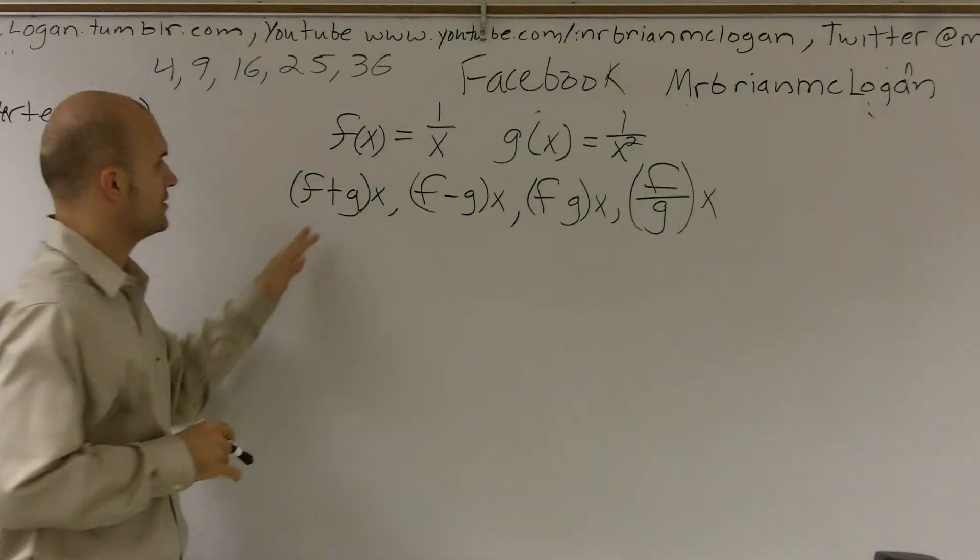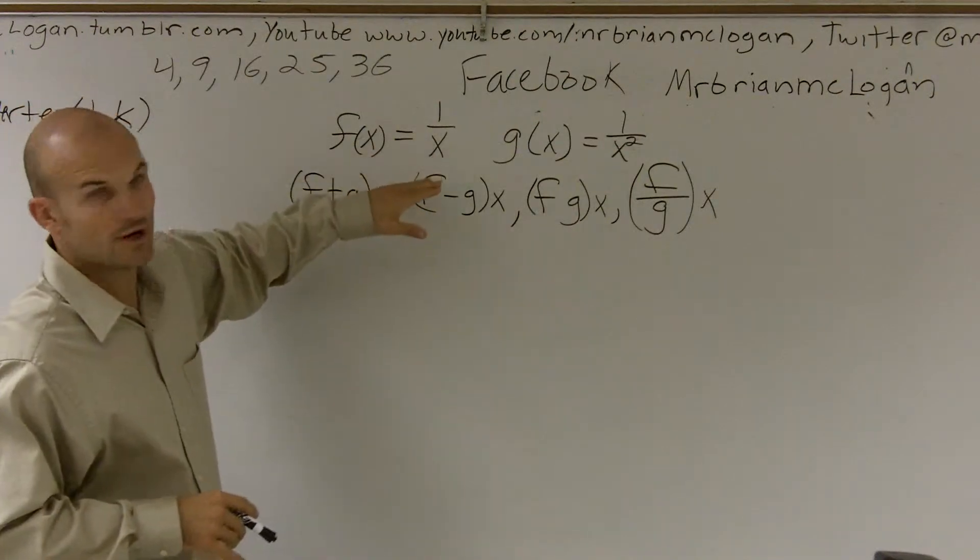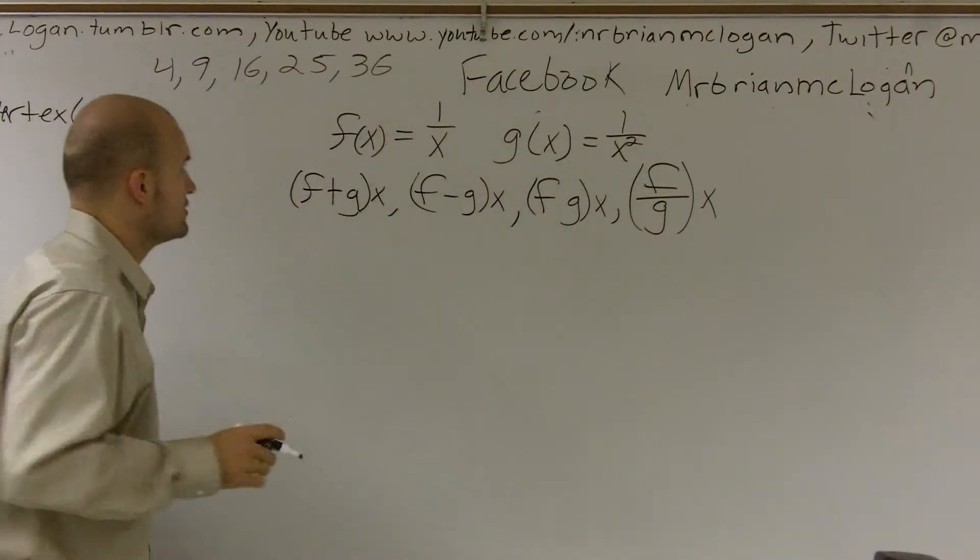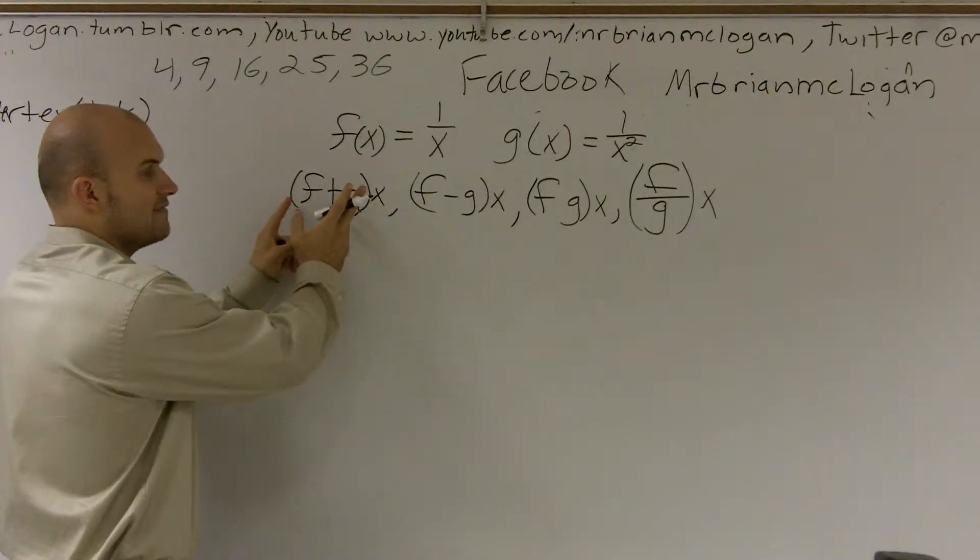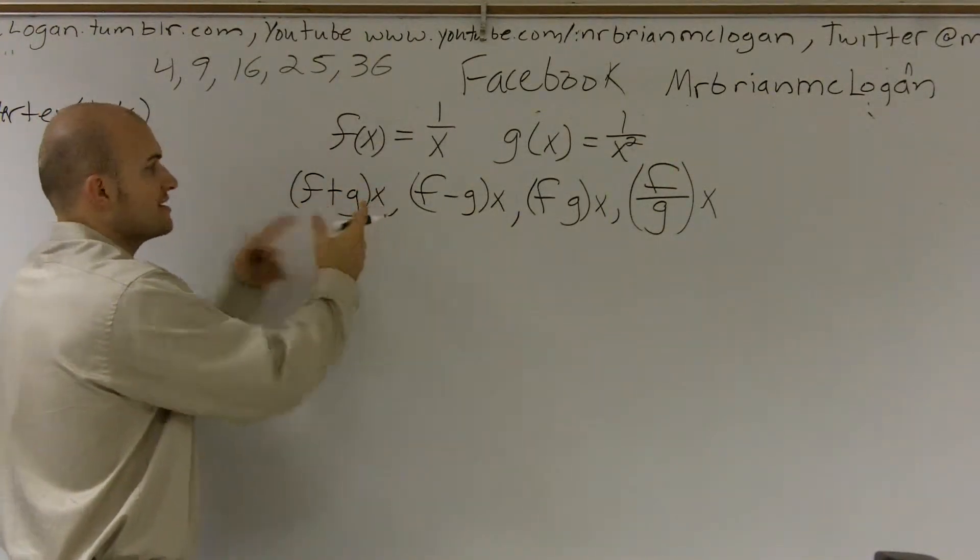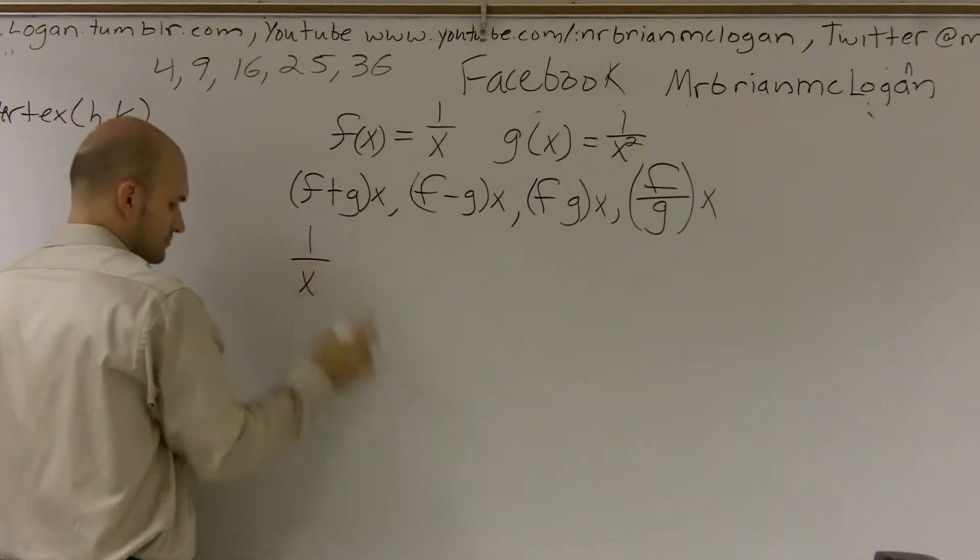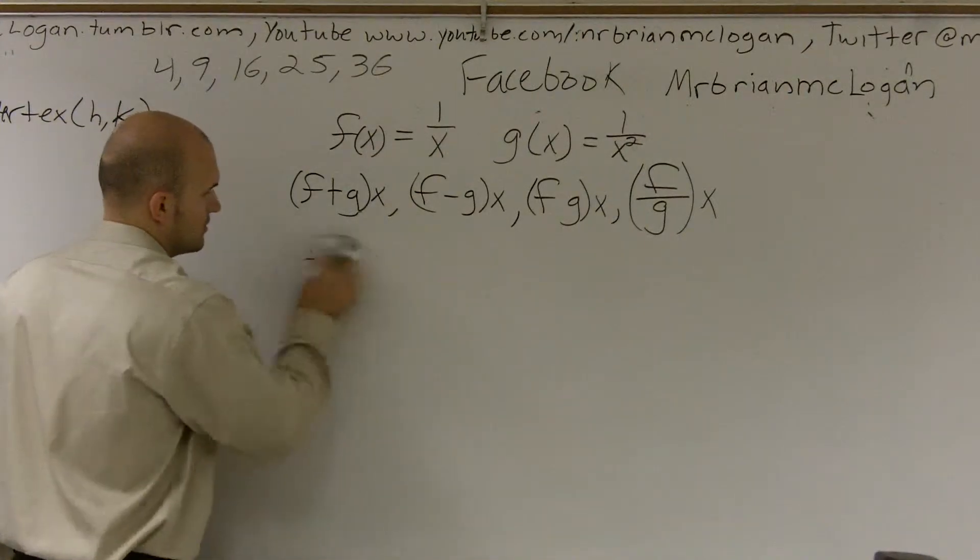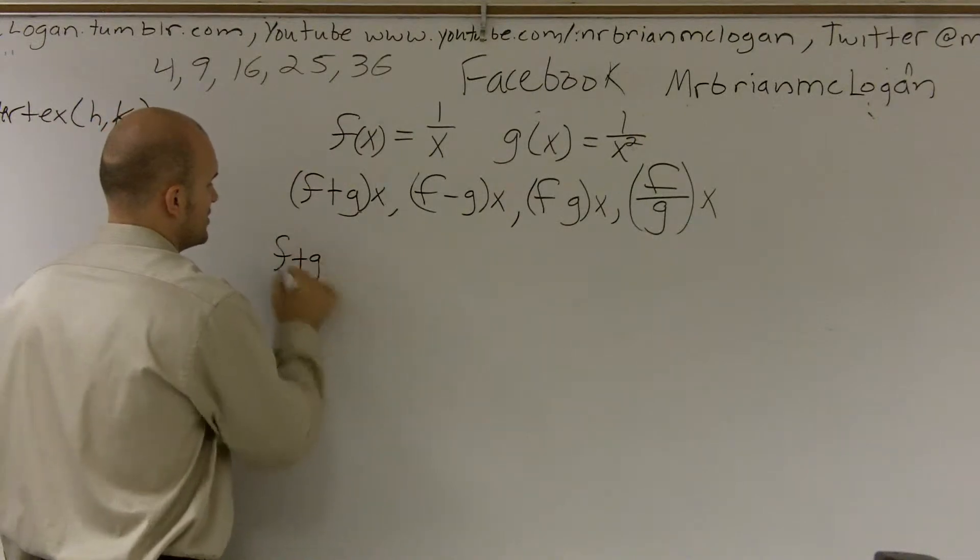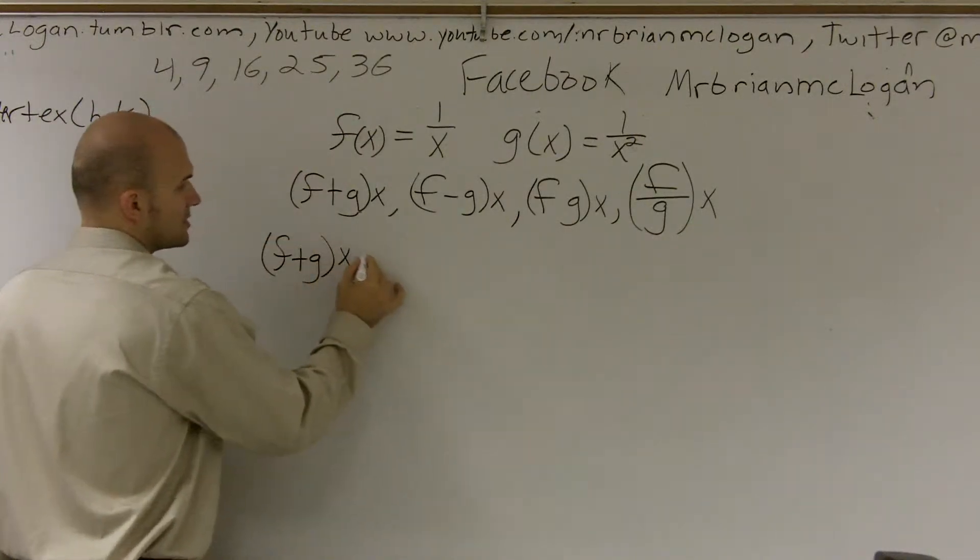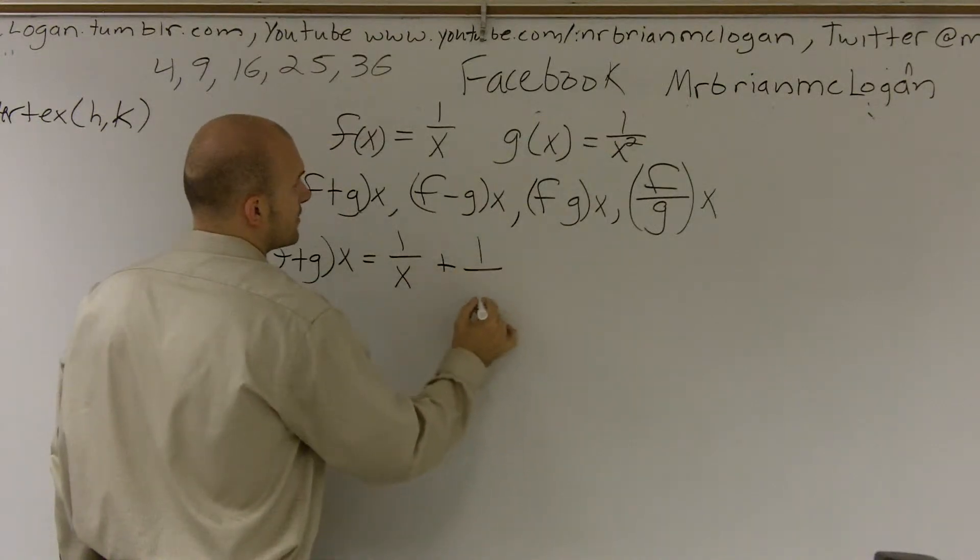So first thing we're going to do is look at f plus g of x. If I'm given the function f of x equals 1 over x and g of x equals 1 over x squared, really all I'm going to do is add your function f of x and add your function g of x and see what happens. So f plus g of x is going to look like 1 over x plus 1 over x squared.